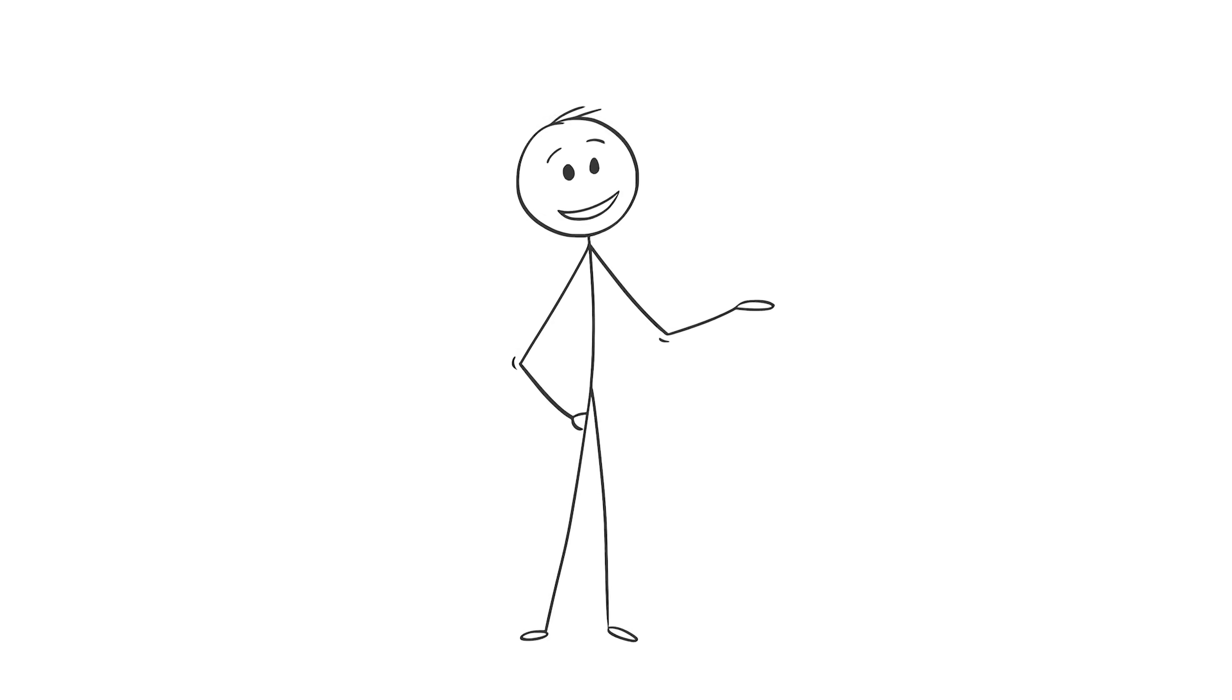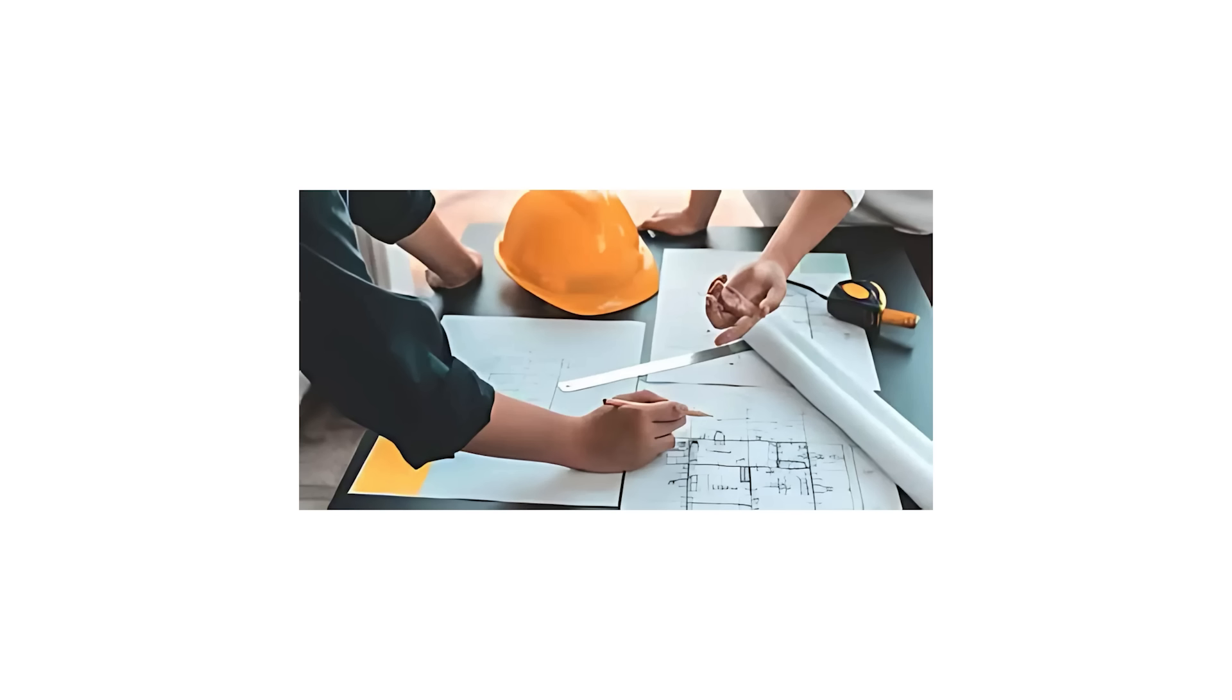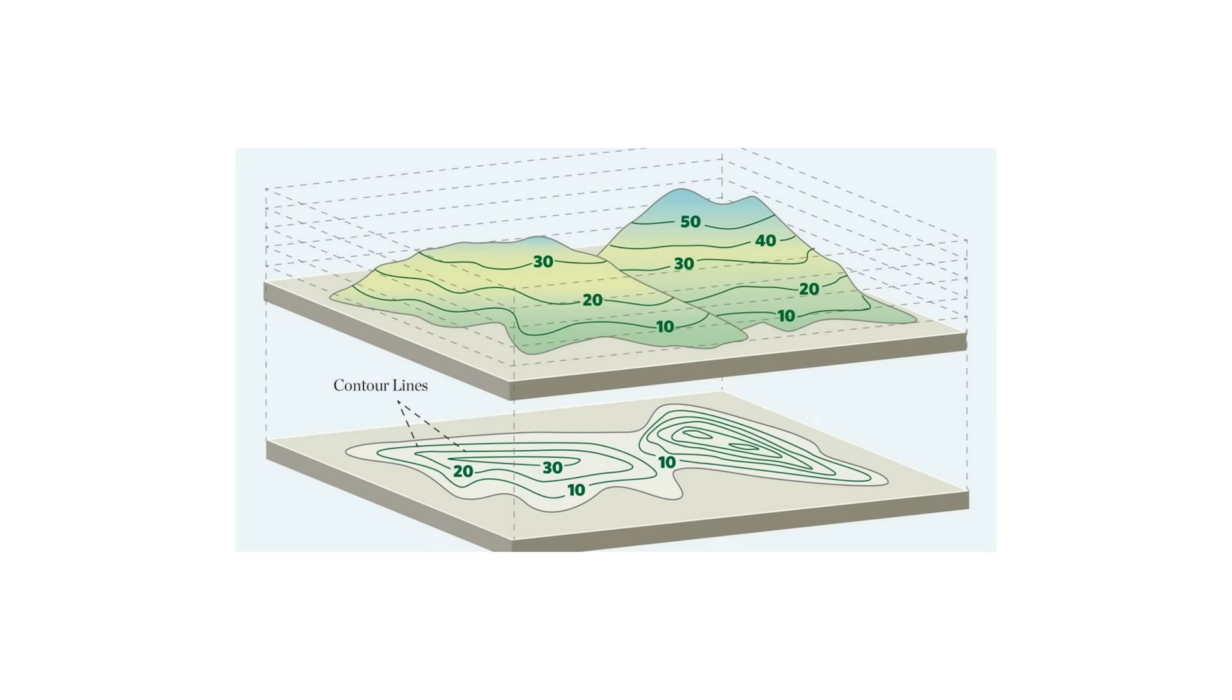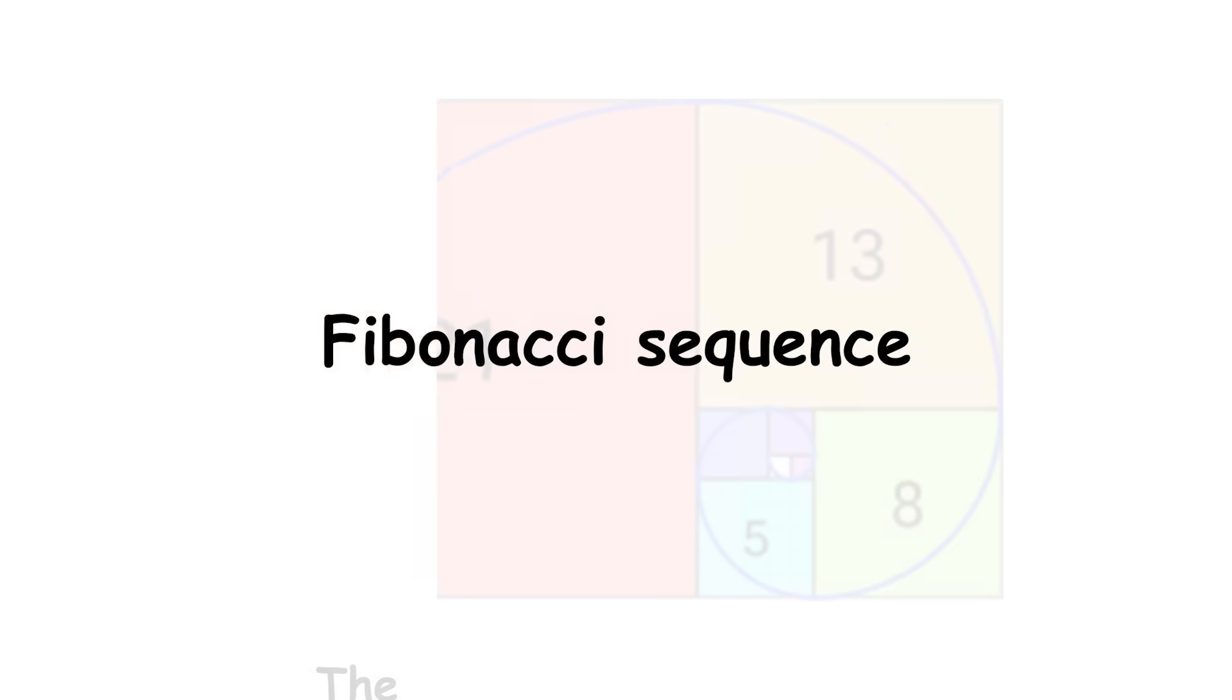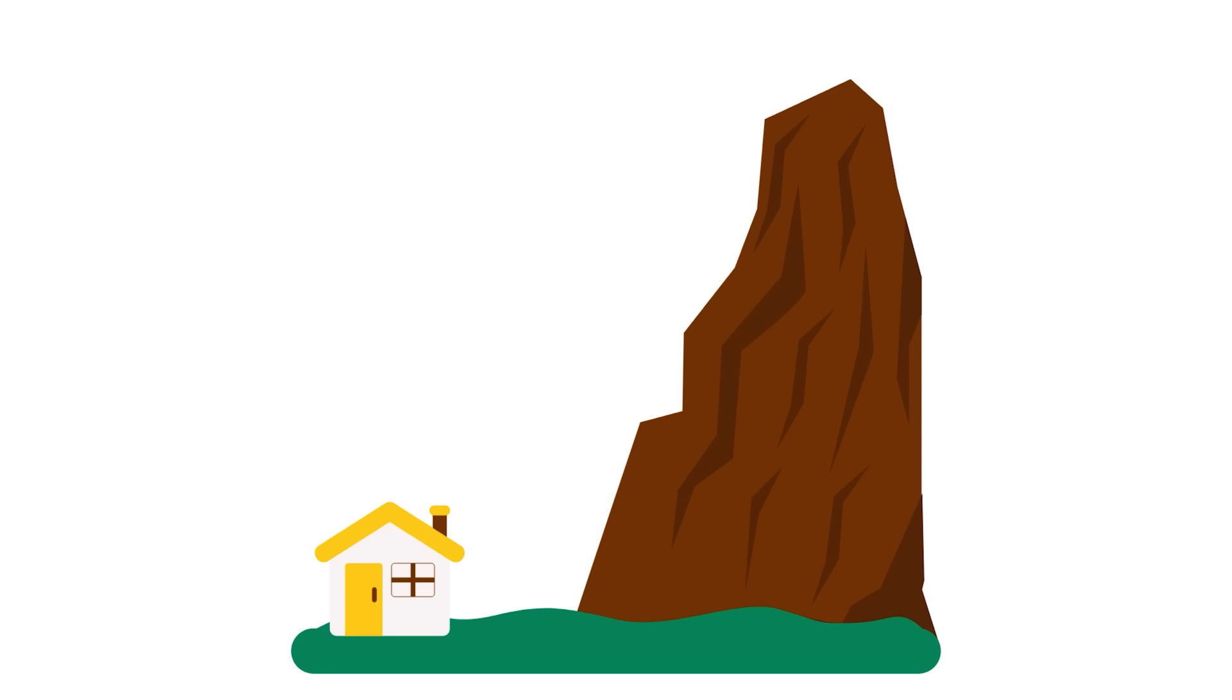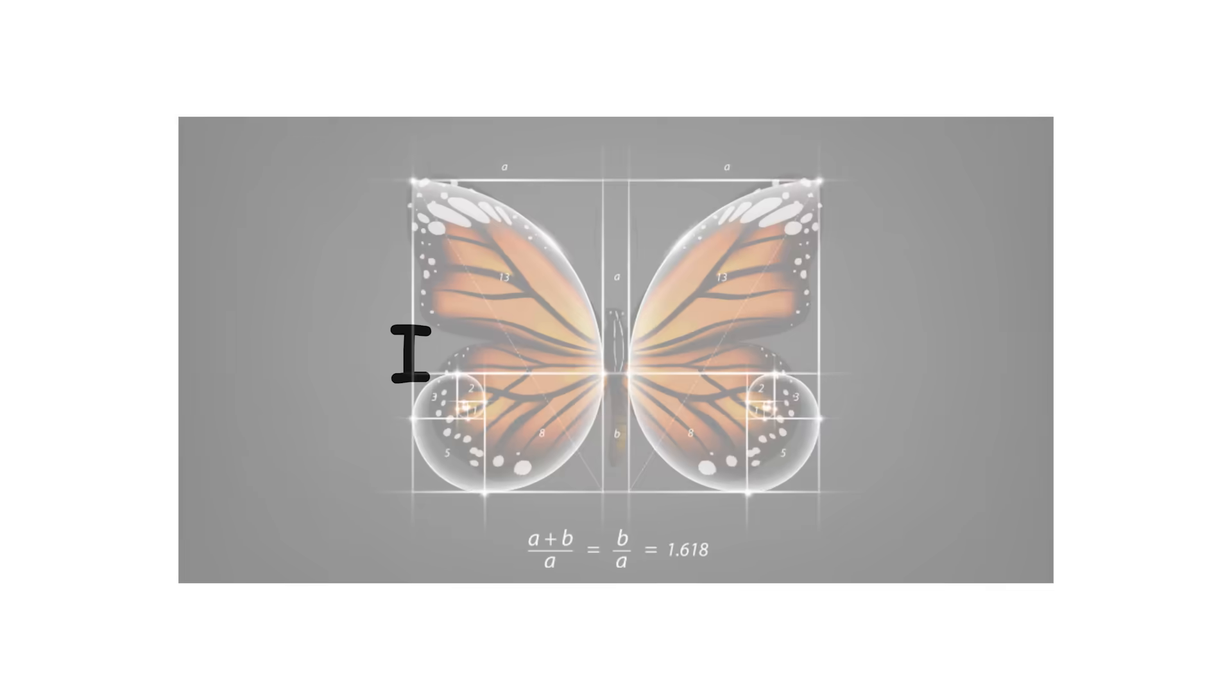1202: Fibonacci sequence. The Fibonacci sequence appears in many natural phenomena, such as the distribution of leaves or the formation of structures in organisms. It also has applications in mathematics, computer science, art, architecture, and modeling of complex systems and growth.